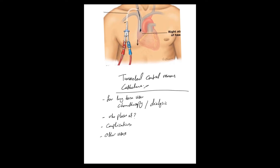Instead of bringing the catheter outside the skin directly, they create a tunnel in the subcutaneous tissue underneath the skin, tunneling the tube and catheter all the way until the other incision. The exit is right here — only the ports of the catheter come out.